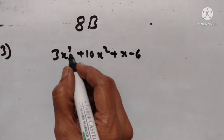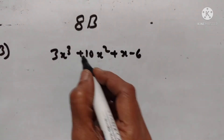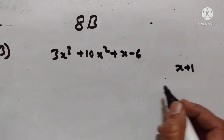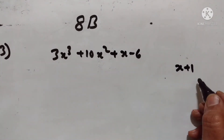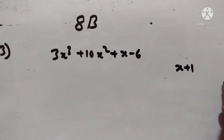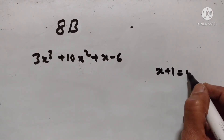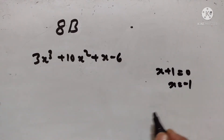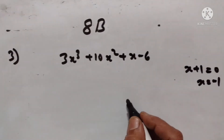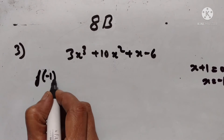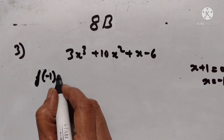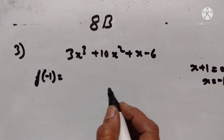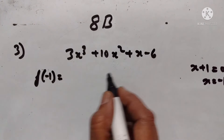Let us factorize this first. Let us see whether x + 1 is a factor of this expression. Let x + 1 = 0, so x = -1. If f(-1) = 0, then x + 1 is a factor of this expression.